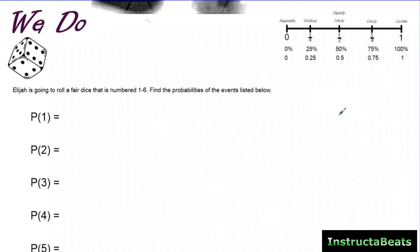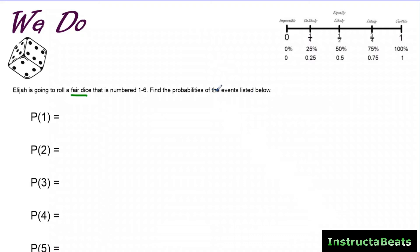Let's try a we-do problem — make sure this is in your notes, the link is in the description. Elijah is going to roll a fair dice numbered one through six. It's a fair dice, meaning each side is a different number, so they all have the same chance of being rolled. Find the probabilities of the events listed below. What is the probability of the event that it lands on a one? A dice has six sides, and there's only one way for it to land on a one, so the probability is one-sixth.